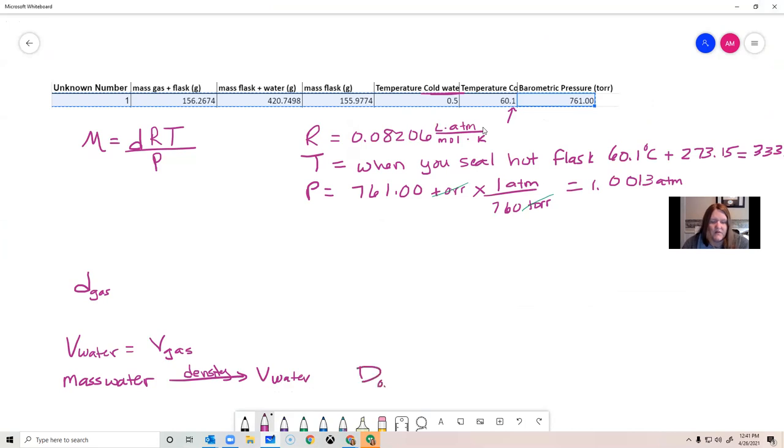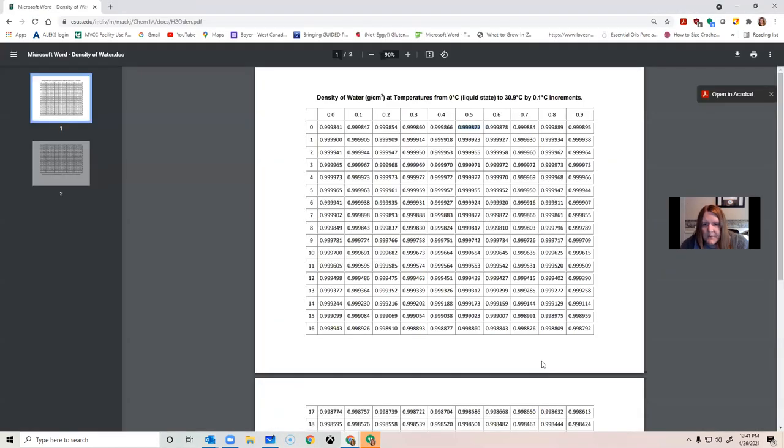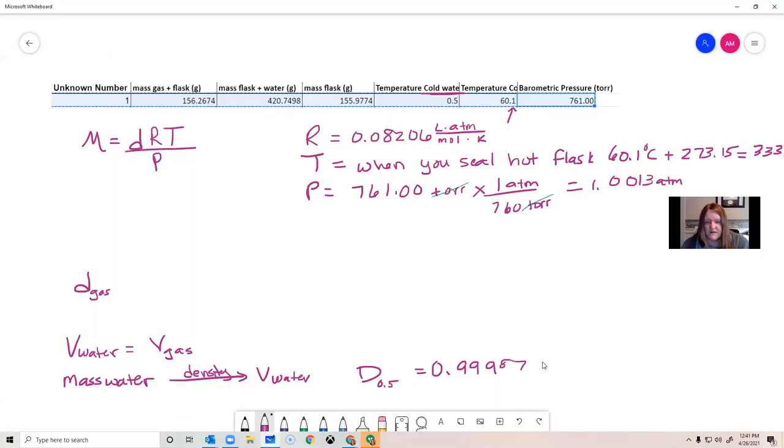So the density at 0.5 for the water is 0.999872, and that unit is grams per milliliter, our standard unit for the density of a liquid. So now I have to figure out what the mass of my water was. This comes from the data table. So we have the mass of the gas and the flask. We also have a mass of the flask full of water. That's the one I want to use here.